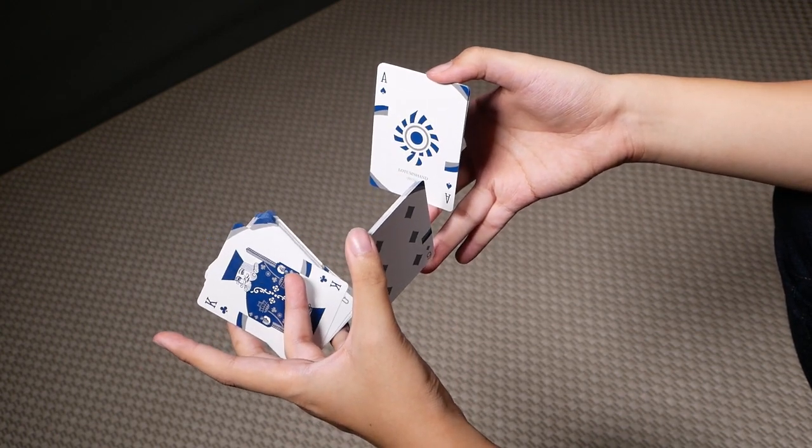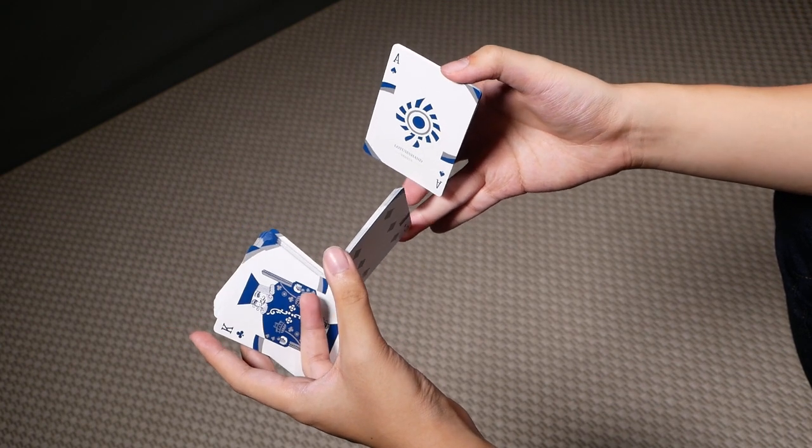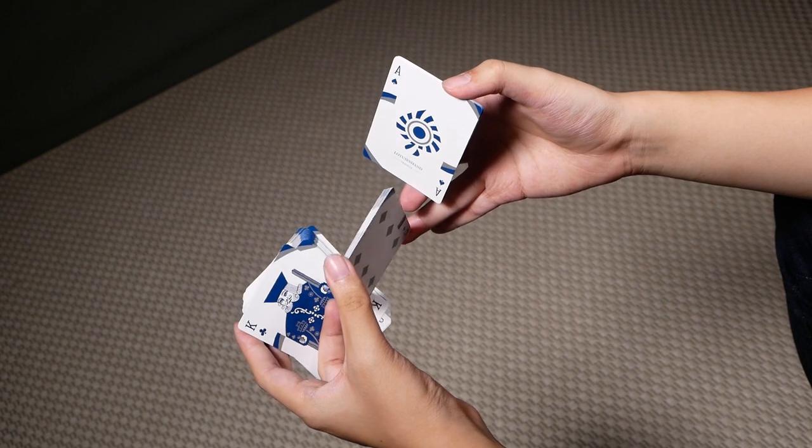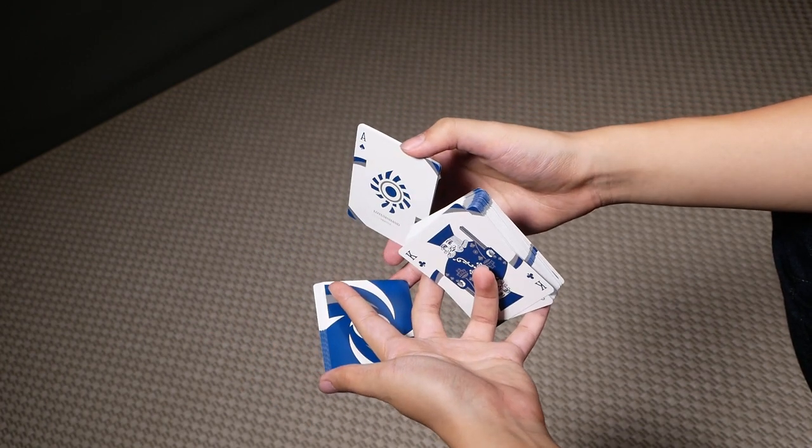With your middle, ring, and pinky, once you've clipped it, you then want to use this packet to spin the middle packet again.